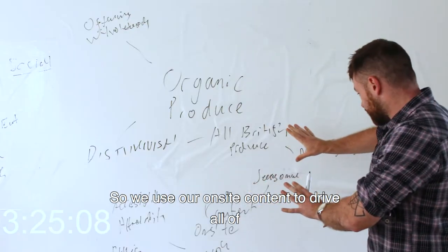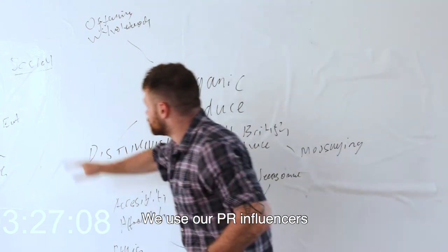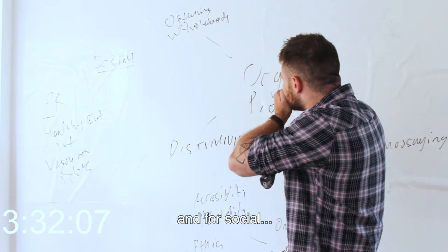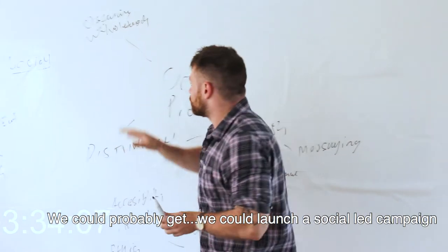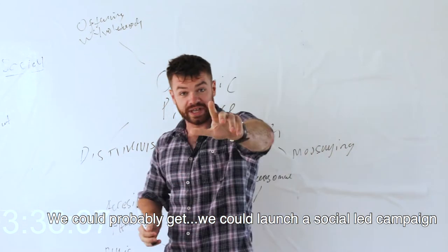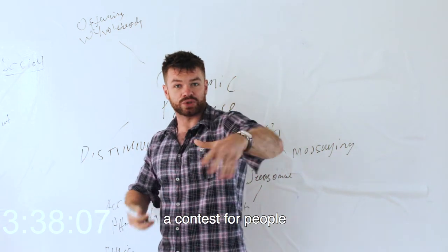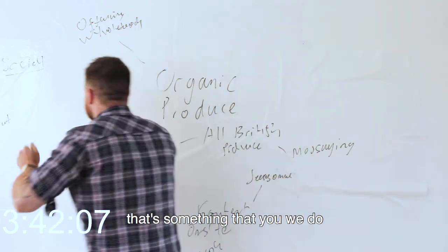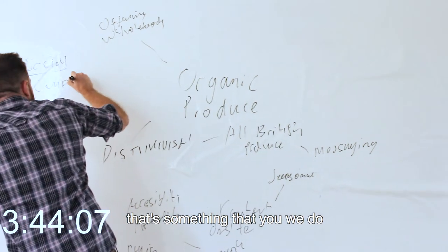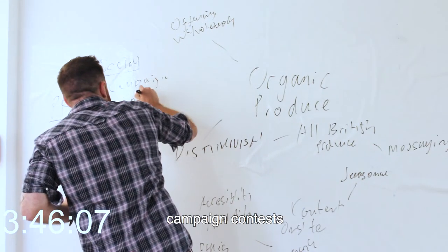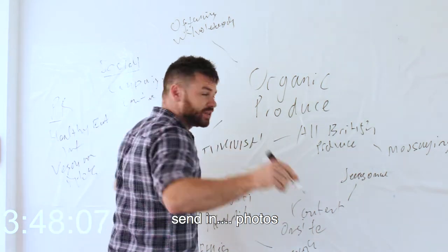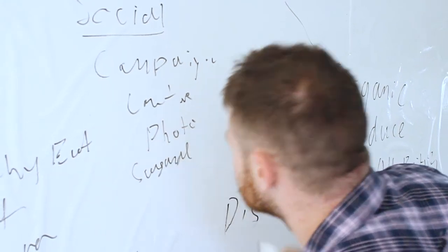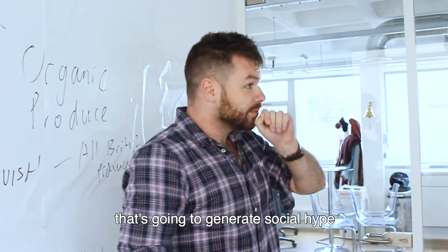We use our on-site content to drive all of that up. We use our PR influencers to generate a bit of hype. And for social, what can we do with social? We could probably launch a social-led campaign, a contest, for people to cook with these vegetables and try to create the most seasonally-approved dish. Campaign contest, send in photos of your sexy seasonal meal. That's going to generate social hype.